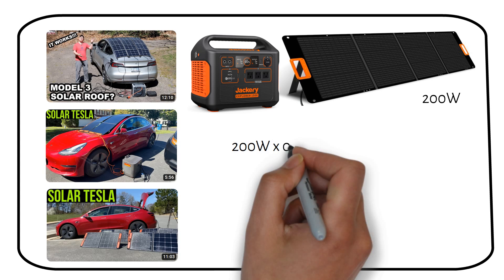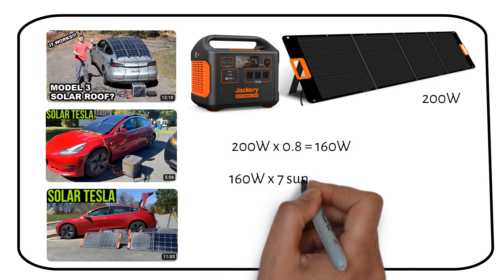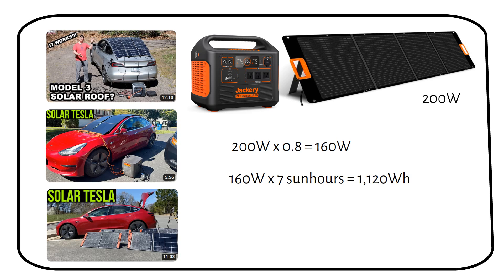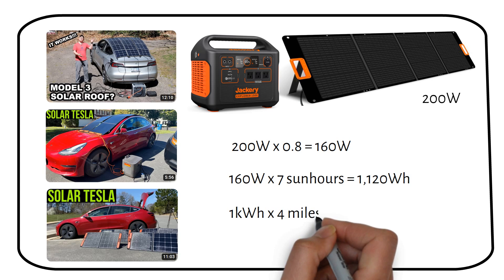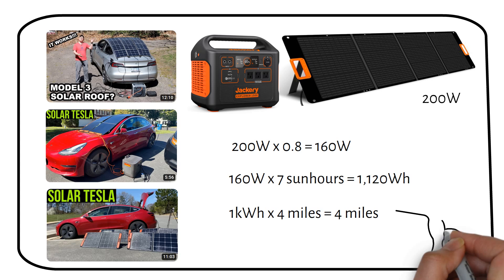As you already know, 200 watts of solar panels will deliver about 160 watts. These panels will deliver 1,120 watt hours or about 1 kilowatt hour. Since 1 kilowatt hour gives you 4 miles, we will get a range of 4 miles. In my opinion, that's not worth the trouble, but it makes for a cool video anyway.